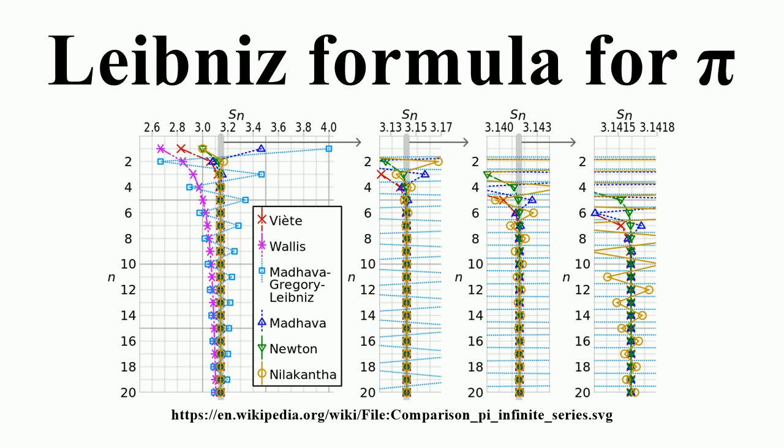In 1992, Jonathan Borvine and Mark Limber used the first thousand Euler numbers to calculate pi to 5263 decimal places with the Liebner's formula.